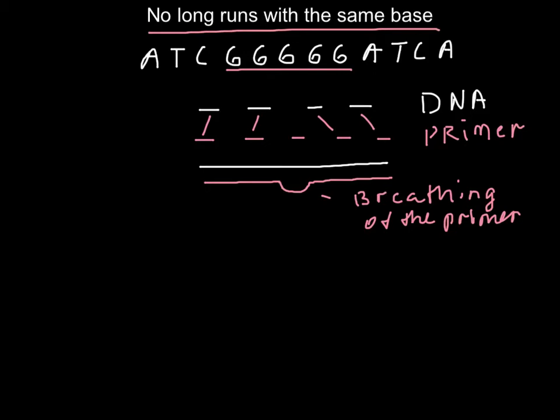That is basically all for this rule. If you have time, let me remind you of two more rules I explained in my earlier videos. This was rule number three. Rule number two is to use the formula for designing two primers: temperature of melting equals 4 multiplied by (C + G) plus 2 multiplied by (A + T).